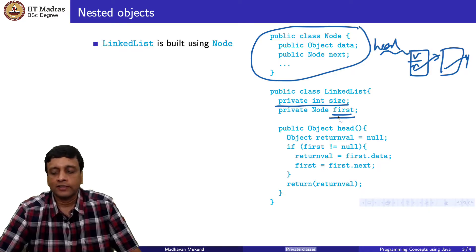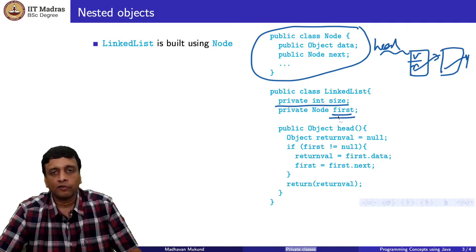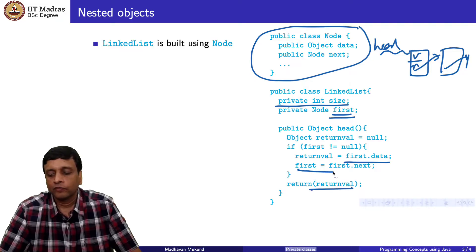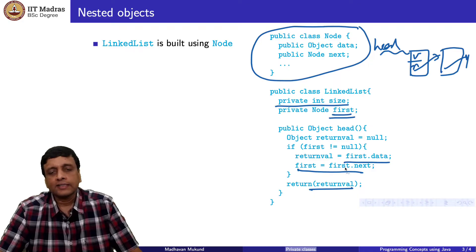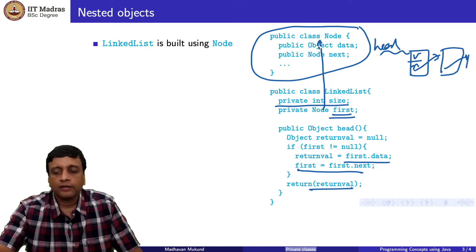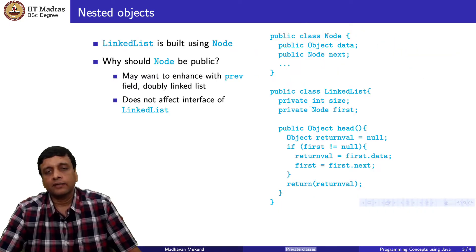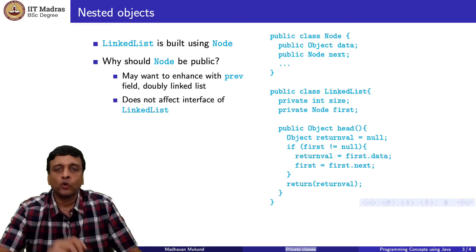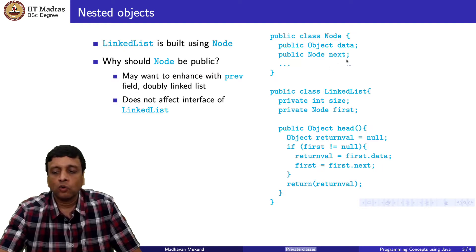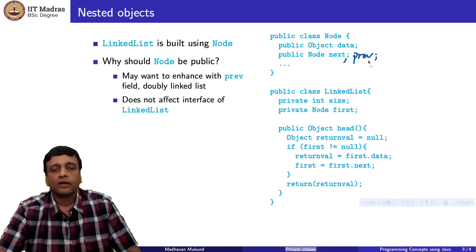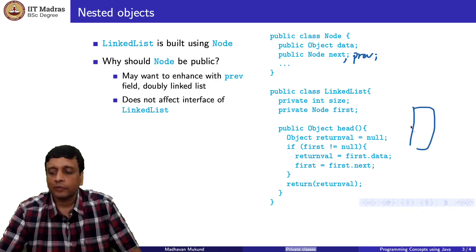If you want to get the value at the head of the list, it's like the equivalent of a pop in a stack — you remove the first data item, return it, and move the first pointer to the next node. This is the typical behavior of a linked list. In this case, linked list is using node as a nested object, just as employee was using date. However, there is some justification for saying that this node class should not be public.